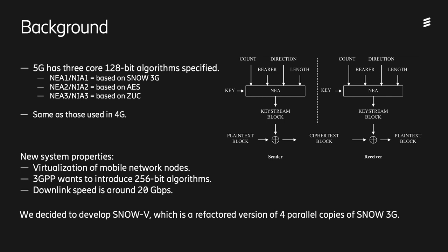Firstly, we have the virtualization property. There is a lot of work going on to virtualize both the core network as well as the radio access network. For the encryption algorithms, this means that in the base stations where the encryption is terminated, the algorithms will have to run virtualized on commodity hardware and not rely on dedicated hardware accelerations like ASICs. This means that the algorithms need to be fast in a pure software implementation. The second thing is that 3GPP, which is the standardization organization for cellular networks, is looking at introducing 256-bit algorithms for the air encryption interface, raising the security level from 128 to 256. The last property is the anticipated future speed of 5G, which is a downlink speed of 20 gigabits per second and maybe even higher.